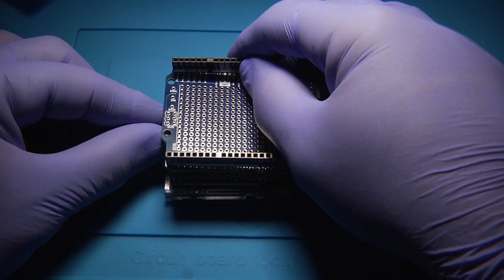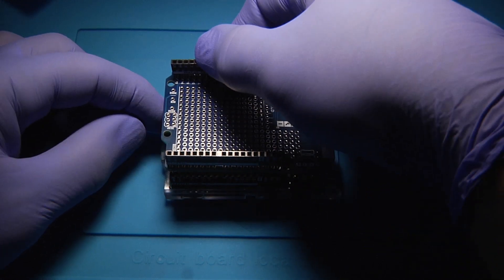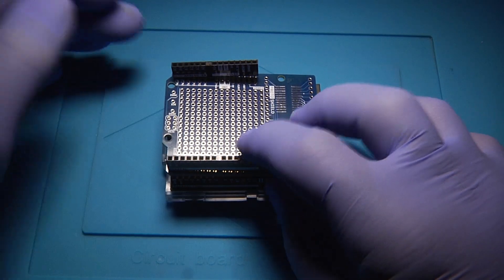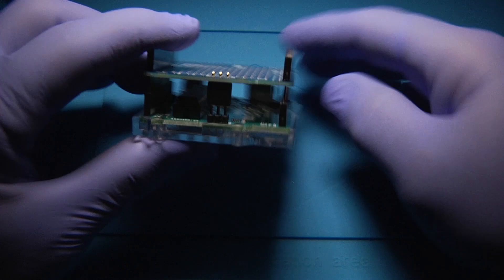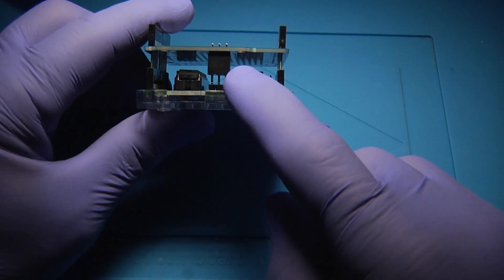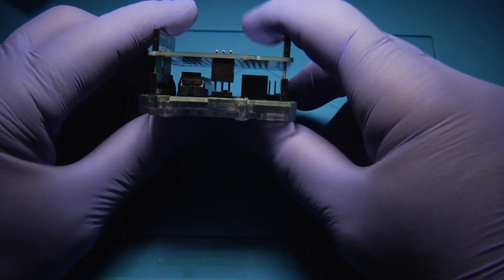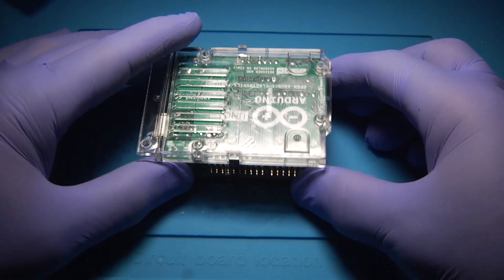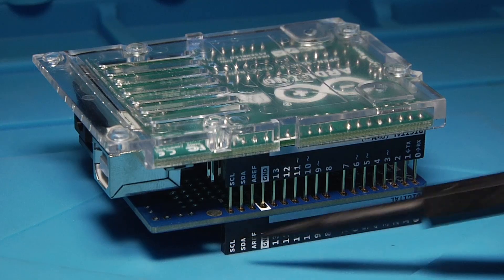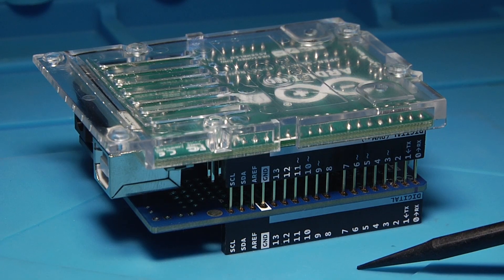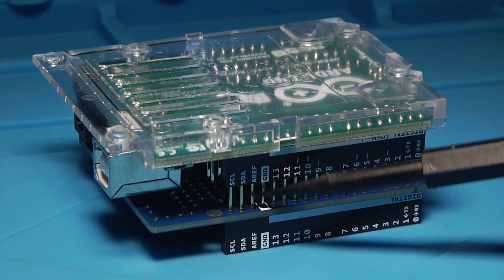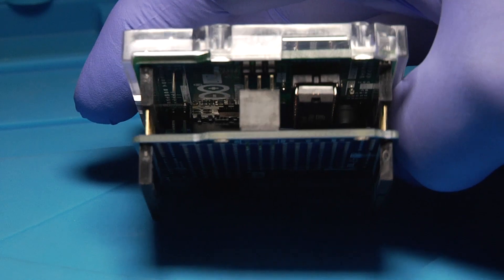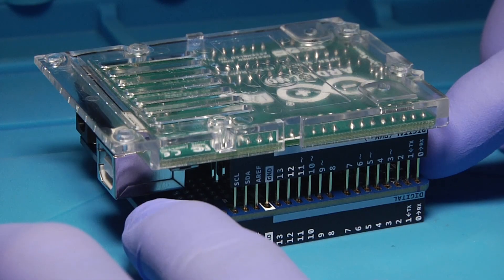Press everything in until it's snug and everything is lined up. Be careful, these pins can bend. Line everything up with the Arduino Uno. Now, place everything upside down. Gravity will hold everything in place. As you can see, the pins on the Arduino Uno are now lined up with the pins on the proto shield. Everything is lined up correctly. It's nice and stable.